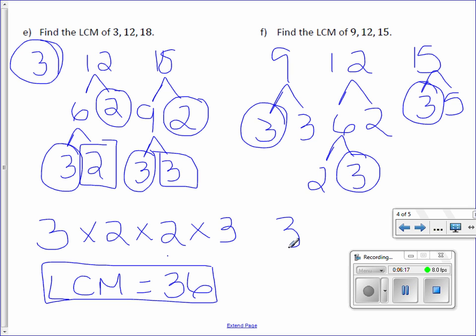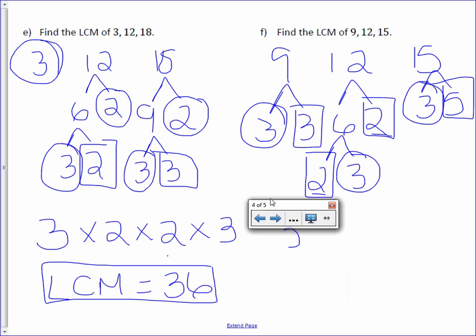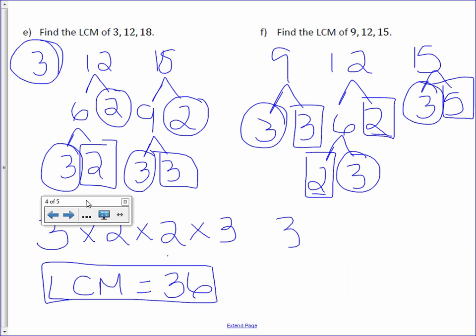And it looks as though nothing else is in common anywhere. We do have a 2 here and here, but because they're on the same tree, that doesn't count. So everything that's left is 3, 2, 2, and 5. So times 3, times 2, times 2, times 5.